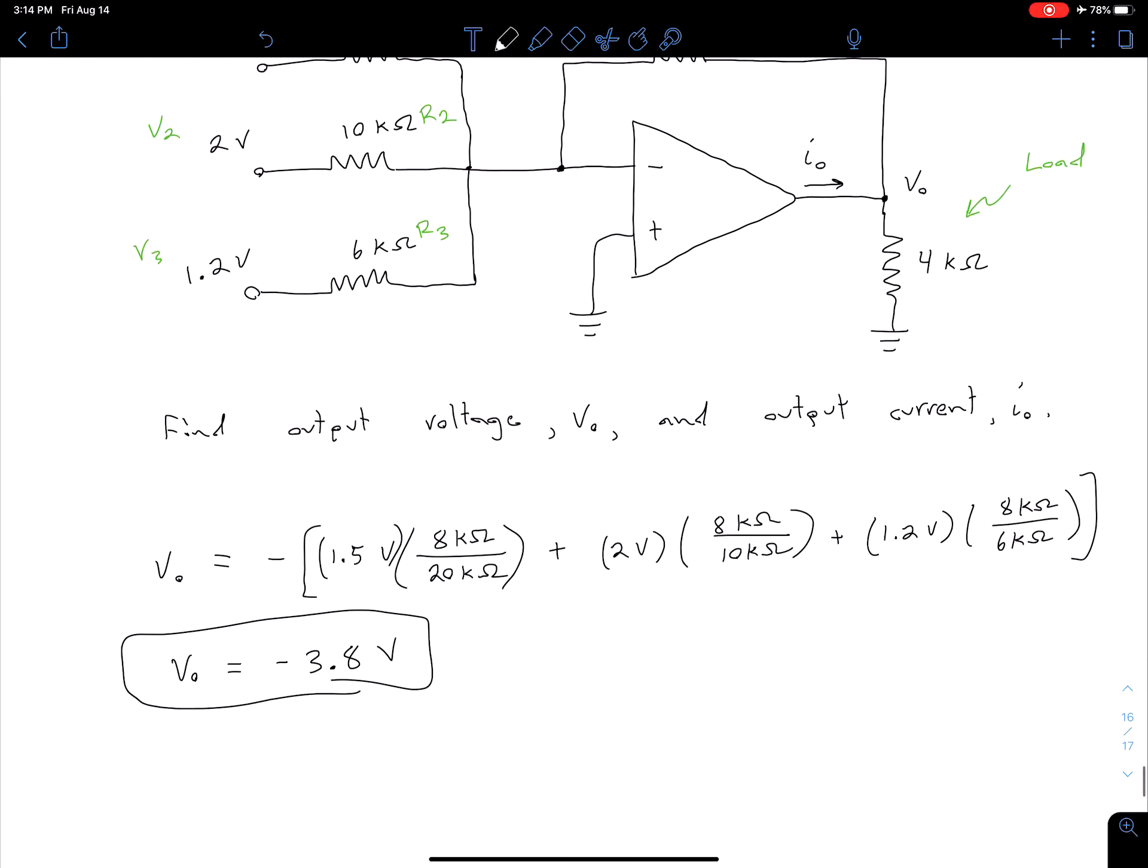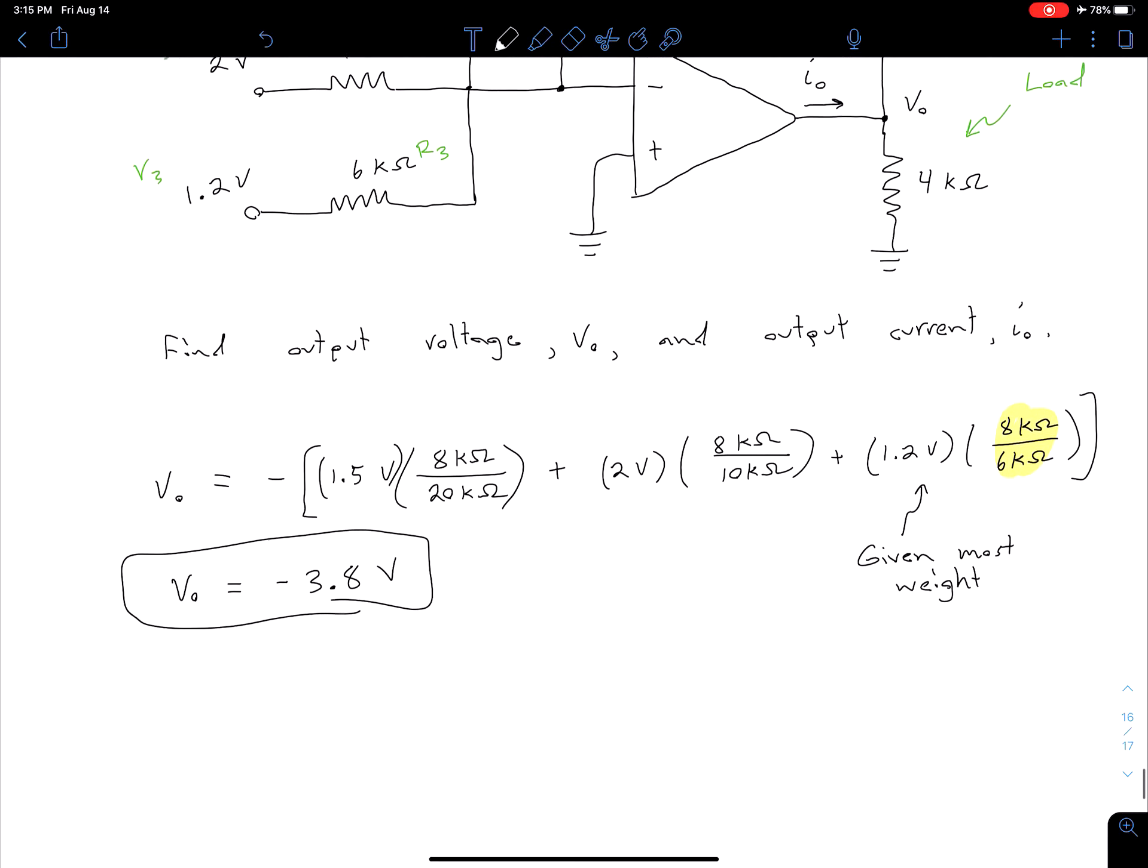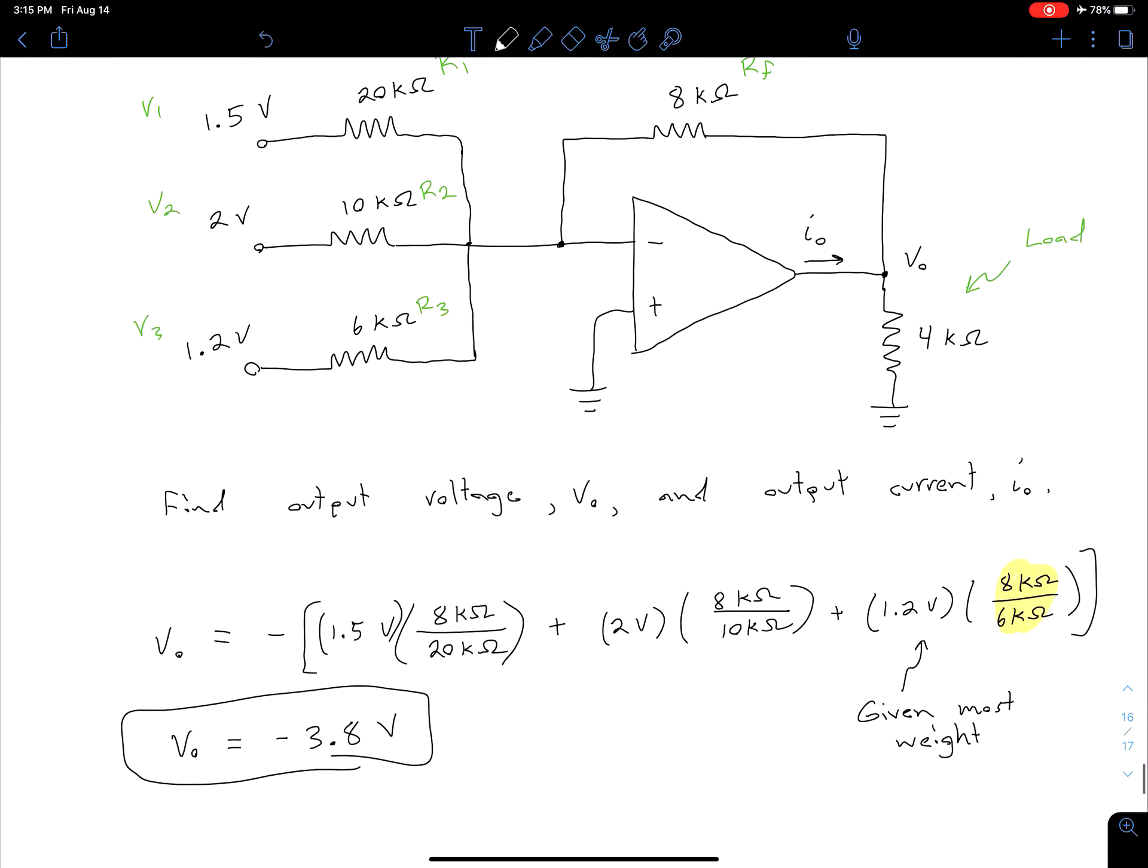If we look, we can see that our V3 is actually given the most weight, and that's because the ratio of R_F to R3 is the largest number compared to the other two, which are 8 over 10 and 8 over 20. So that's our V_out, that's pretty straightforward.